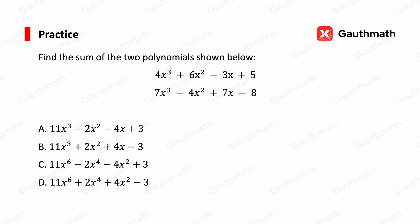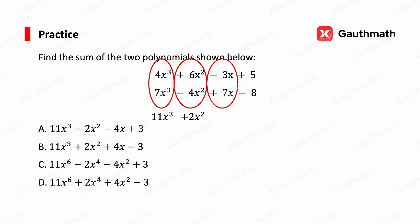Let's do one practice: find the sum of the two polynomials shown below — (4x³ + 6x² − 3x + 5) and (7x³ − 4x² + 7x − 8). Both polynomials are already written in descending order, so we just find and combine like terms. The x³ terms give 11x³, the x² terms give 2x², the x terms give 4x, and the constants give −3. So the answer is 11x³ + 2x² + 4x − 3, and the correct answer is B.